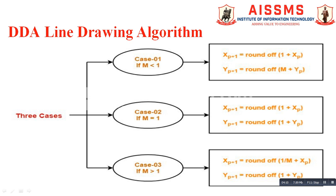When the value of m is equal to 1, the x-coordinate of the next point is calculated as round(1 + xp), and the y-coordinate of the next point is calculated as round(1 + yp). When the value of slope is greater than 1, the x-coordinate of the next point is calculated as round(1/m + xp), and the y-coordinate of the next point is calculated as round(1 + yp).